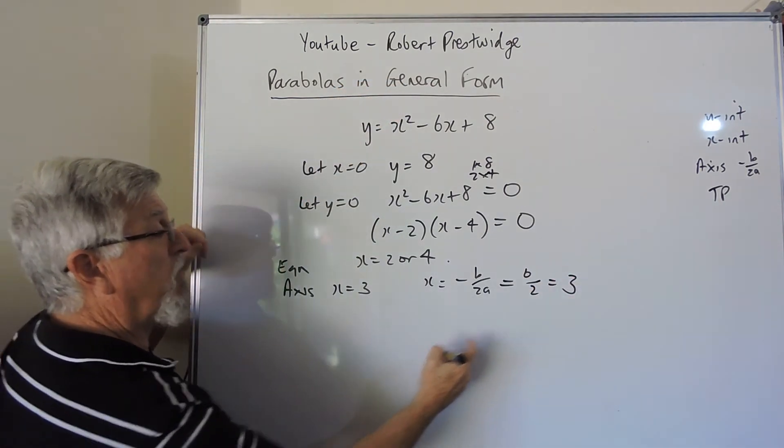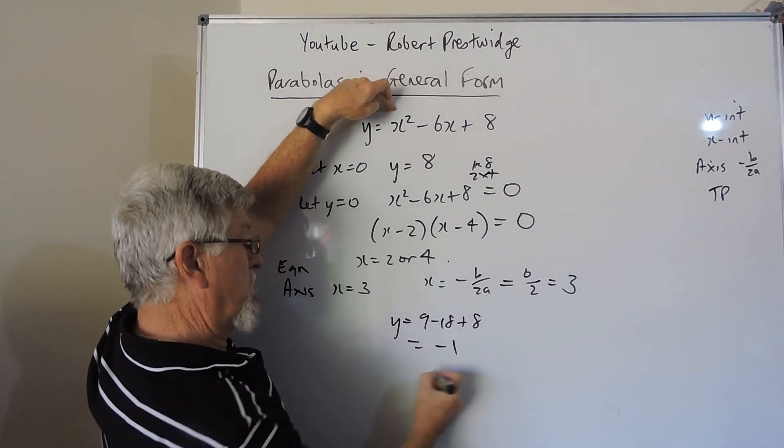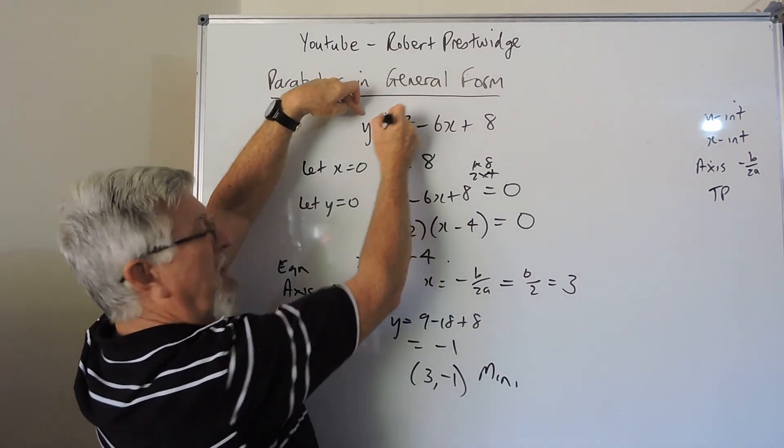And the last thing is the turning point, substitute the 3, and we get 9 minus 18 plus 8, which is minus 1. So we have a turning point, 3 minus 1, which is a min, because this is faced upward.